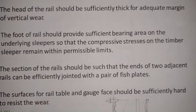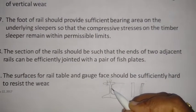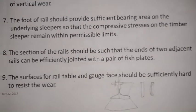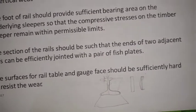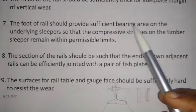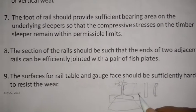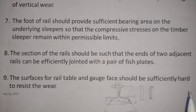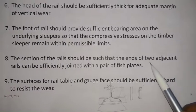Whatever loads are acting on the rail will be transmitted to the parts beneath. When we have a timber sleeper, the load that the rail is taking should be distributed over a larger area to maintain safety. The foot of the rail should provide sufficient bearing area on the underlying sleepers so that compressive stresses on timber sleepers remain within permissible limits.